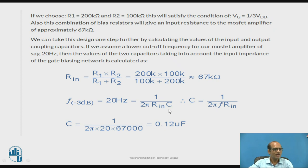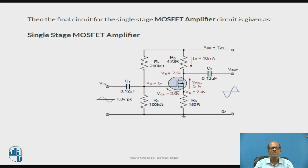For calculating the values of C1 and C2, let us select the lower cutoff frequency as 20 hertz, so that is given by 1 upon 2 pi R1 into C. Substitute the values and from this we calculate C is equal to 1 upon 2 pi 20 into 67k, that is 0.12 micro farad, that is value of C1 and C2. This is the complete circuit which shows R1, R2, Rd, Rs all the component values. In this way we complete the design of this common source amplifier circuit using E MOSFET. We have designed all the biasing resistors and the coupling capacitors C1 and C2.